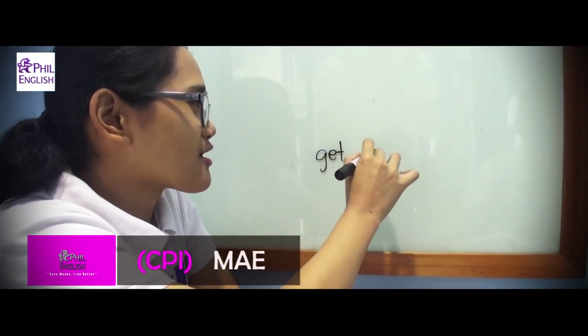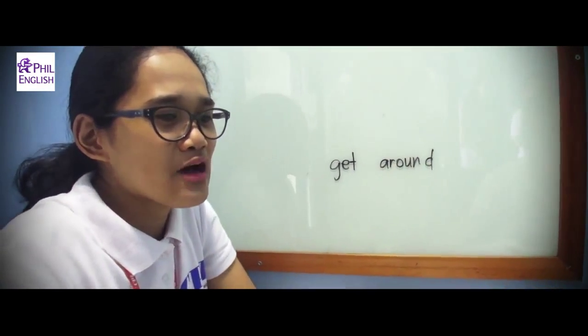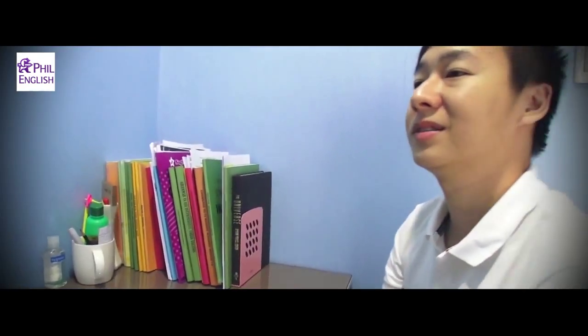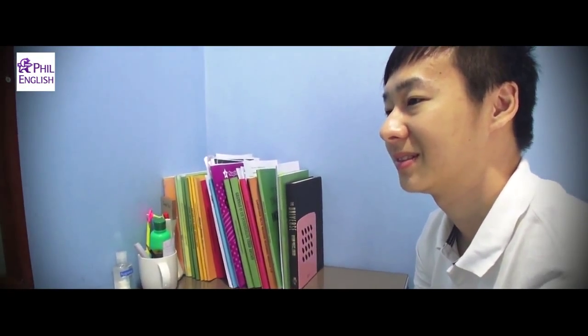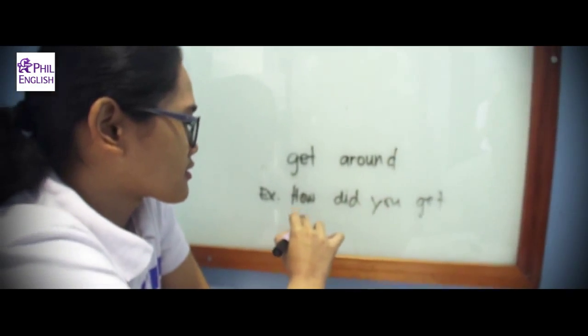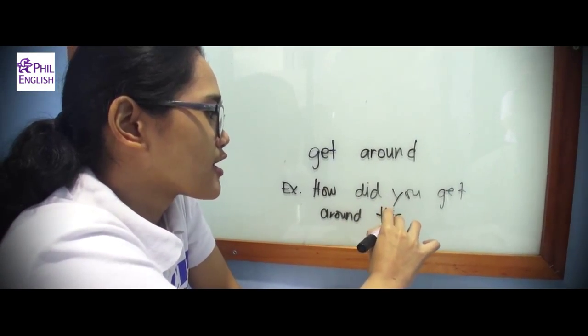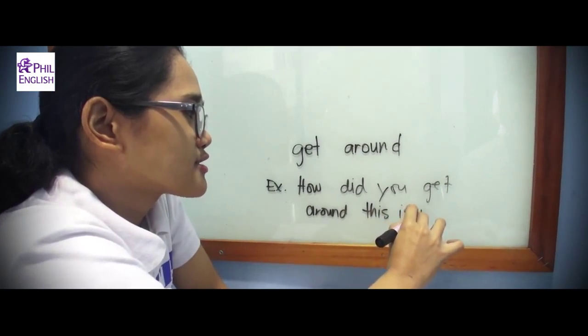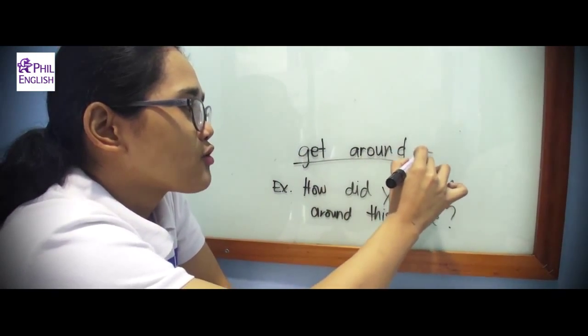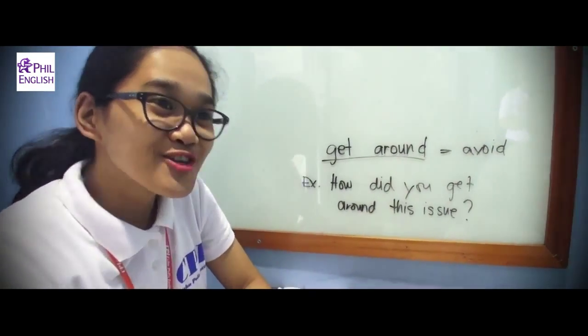It's 'get around.' When do we use 'get around'? Could you give me an example? 'How did you get around the issue?' So in this case, 'get around' means to avoid. Yes. Alright, good.